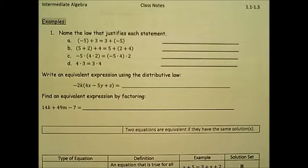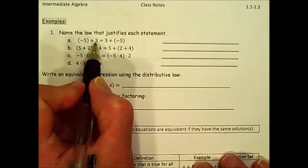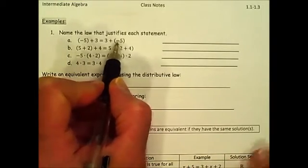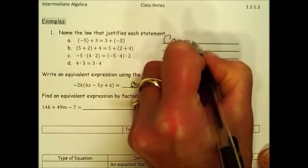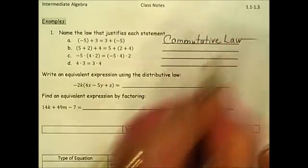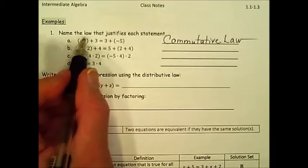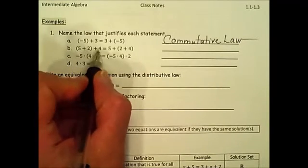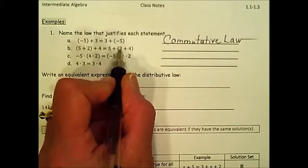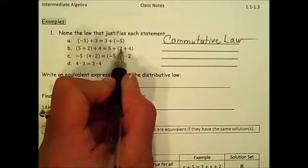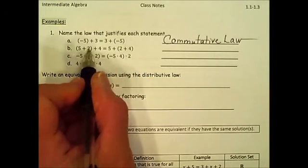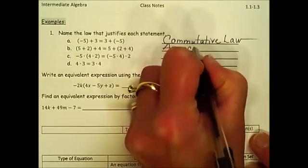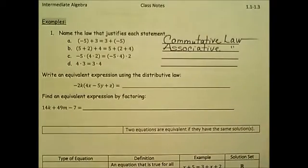Looking at examples that justify these laws: the first shows that negative five plus three is the same as three plus negative five. There are only two numbers and their order changed — this is an example of the commutative law. In the next one, adding five plus two first then adding four is equivalent to adding two plus four first then adding five. The order stayed the same but the grouping changed — this is an example of the associative law that allows us to have an equivalent statement.